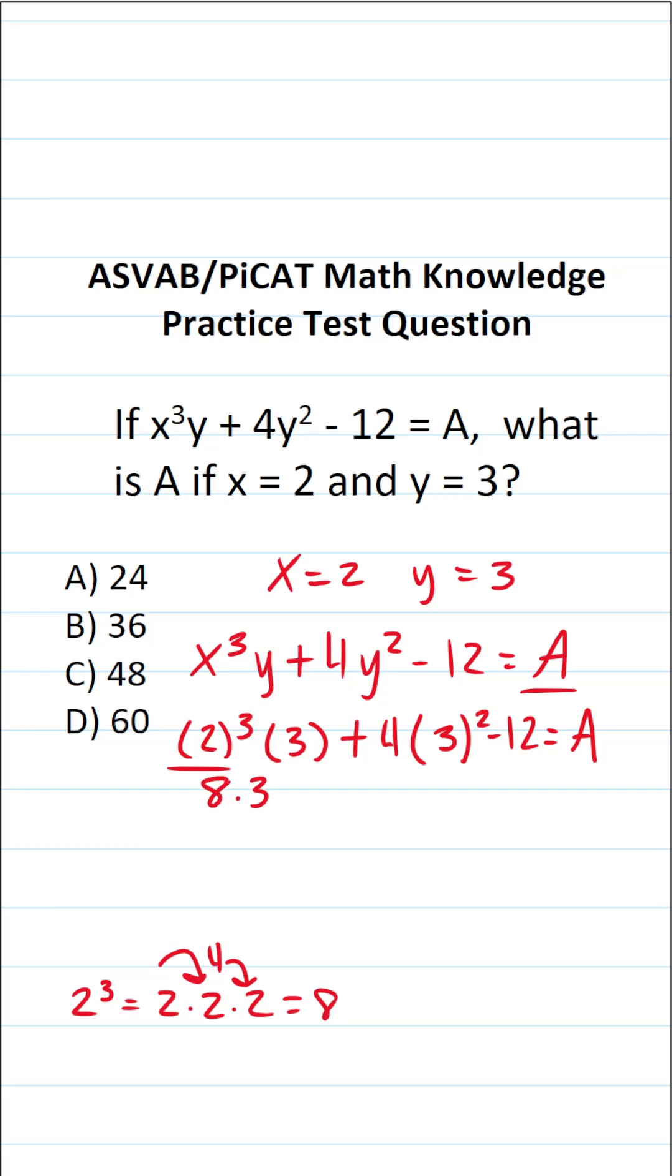So this becomes 8 times 3 plus 4 times, what is 3 squared? Well, 3 squared is 3 multiplied by itself twice. 3 times 3 is 9. So this is 4 times 9 minus 12 equals A. Let's keep working this out. 8 times 3 is 24. 4 times 9 is going to be 36 minus 12 equals A.